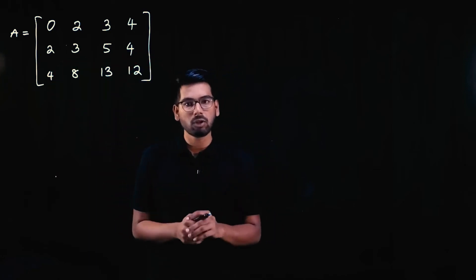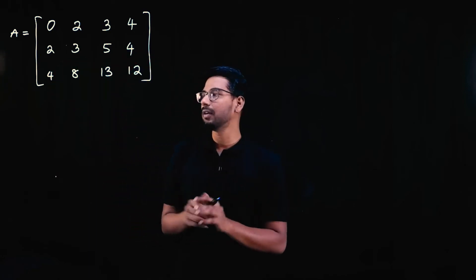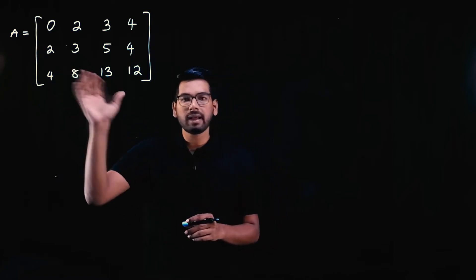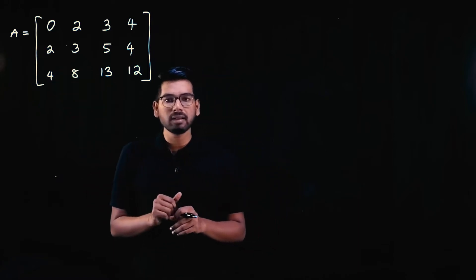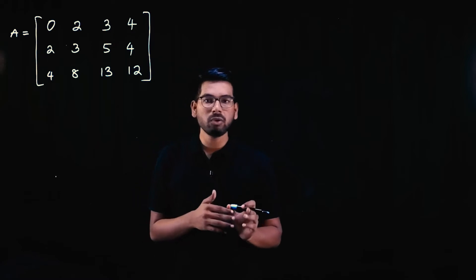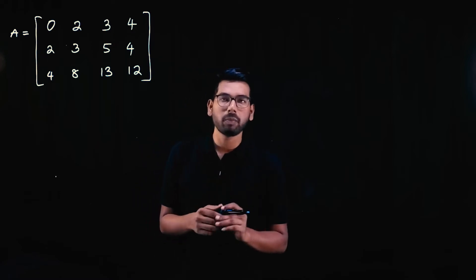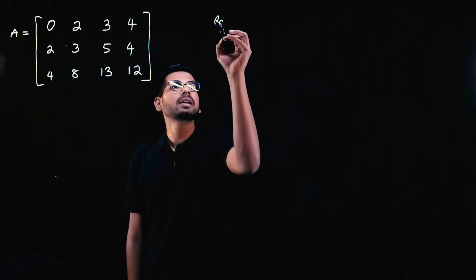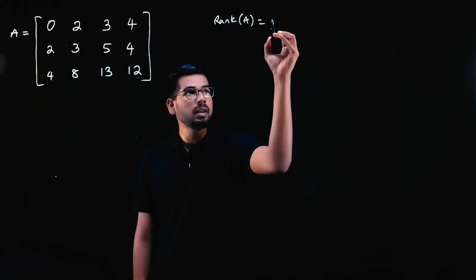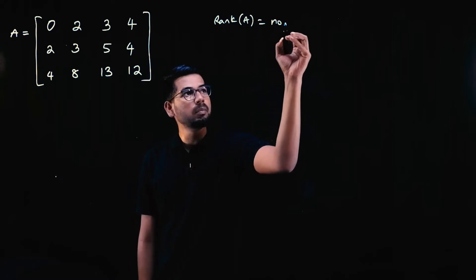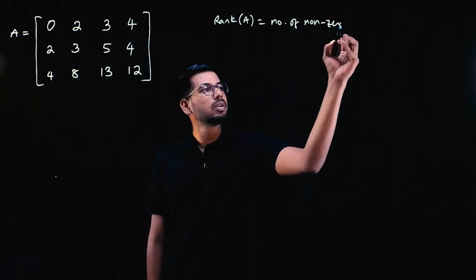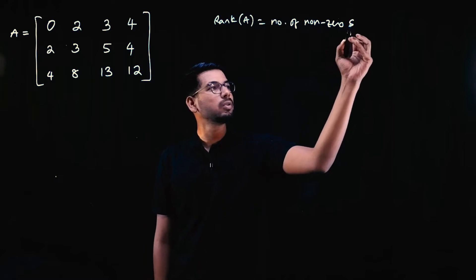We covered what rank is in a previous video. Rank is the number of non-zero rows after row operations. So the rank of matrix A is the number of non-zero rows after we do row operations.